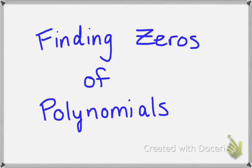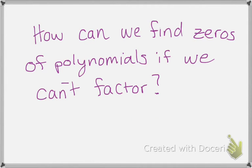Hi everybody. Today we are going to discuss how to find the zeros of polynomials. What happens if you look at your polynomial and it is not easily factorable? How do you even start finding the zeros of your polynomial?